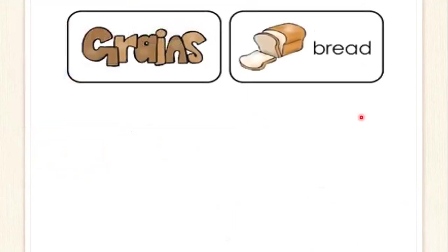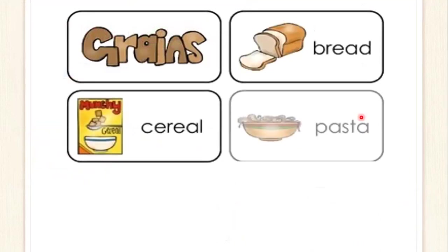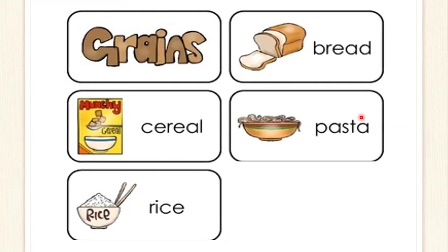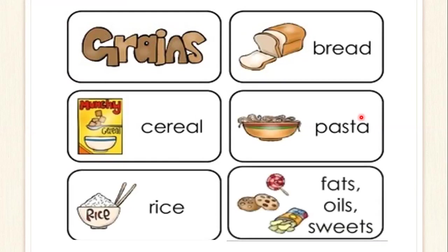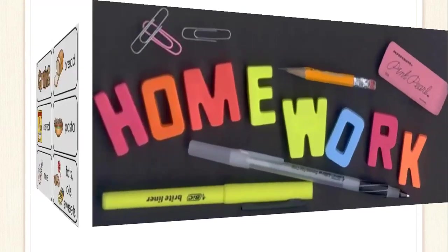Now we talk about grains. Grains vienen a ser todo tipo de granos, like bread, cereal, pasta, and rice. Also, we have fats, oils, and sweets. Fats and oils vienen a ser lo que es grasas y aceites, que también forman parte de una dieta alimenticia.